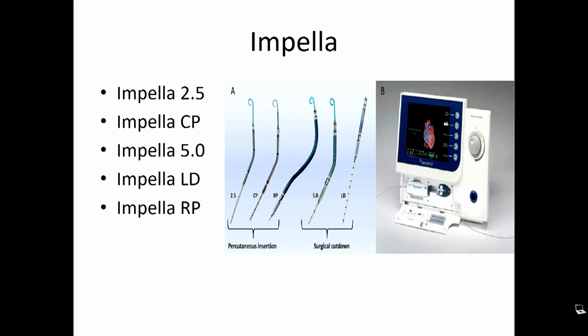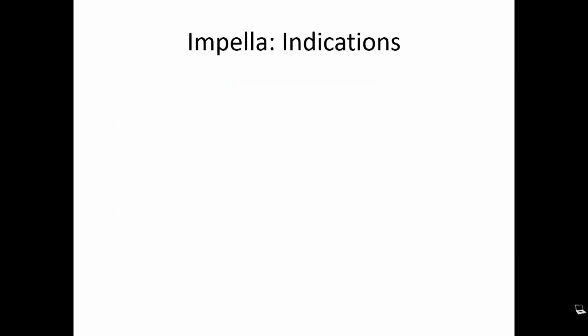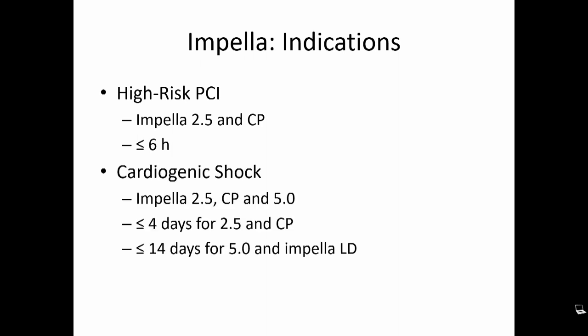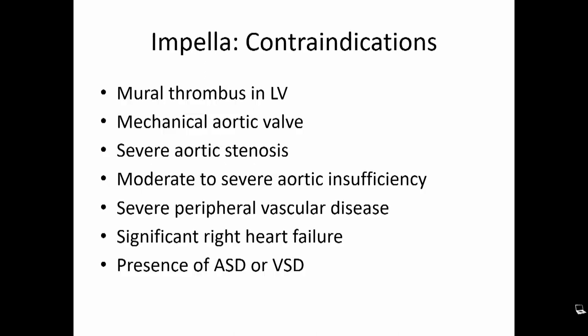The second family of pumps is Impella. We have multiple types: Impella 2.5, CP, 5.0, LD for left-side support, and RP for right-side support. It is approved for high-risk PCI up to six hours, cardiogenic shock up to four days for Impella 2.5 and CP, and up to 14 days for Impella 5.0 and LD. Contraindications include LV thrombus, mechanical aortic valve, severe aortic regurgitation, moderate-to-severe aortic insufficiency, severe peripheral vascular disease, significant right-side failure, and the presence of ASD or VSD.